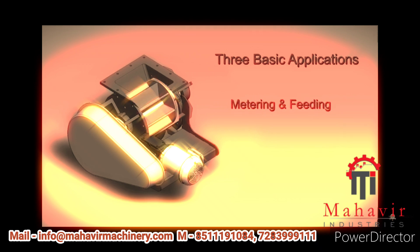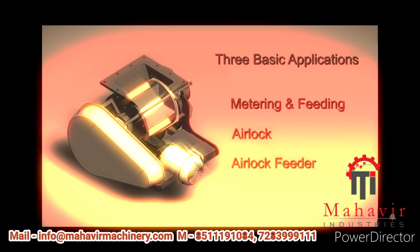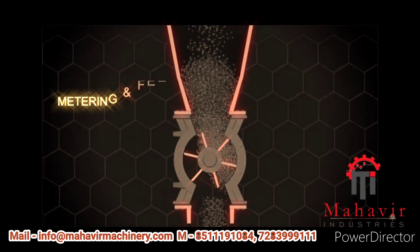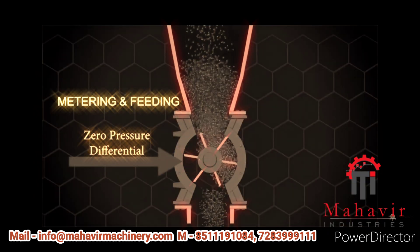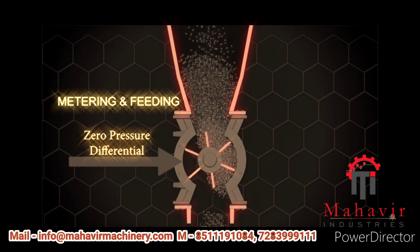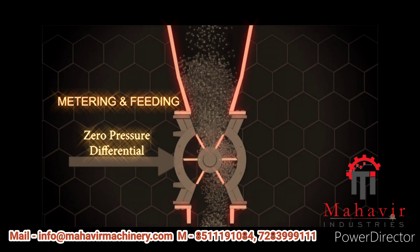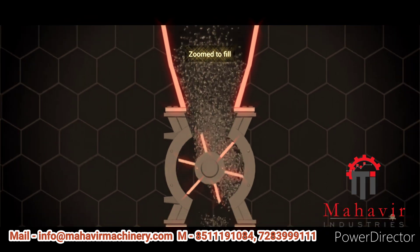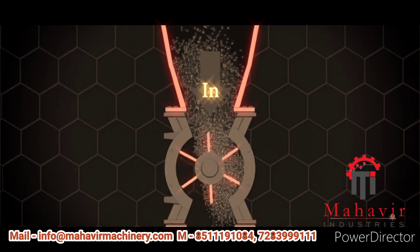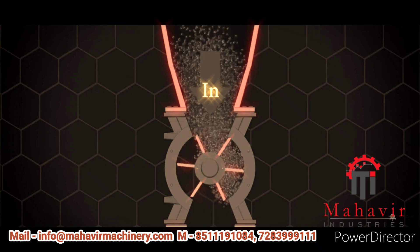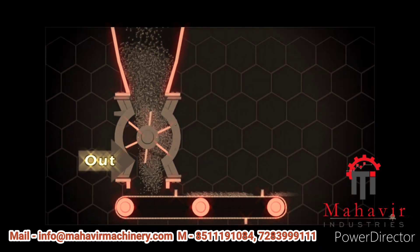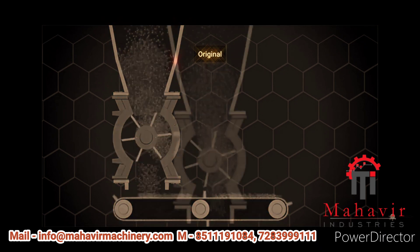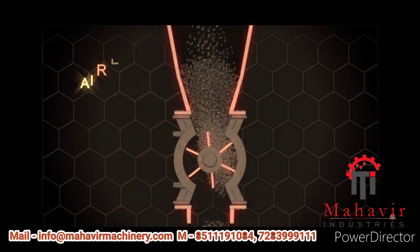There are three basic application types: metering and feeding, airlock, and airlock feeder. Metering and feeding is where the valve is not responsible for air pressure sealing, but only metering material at a set fixed rate. As the veins rotate, material enters through the top into the pockets and then exits through the bottom outlet to a bin, conveyor, or other device.